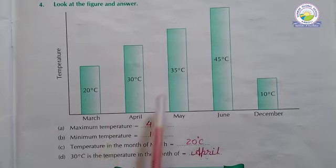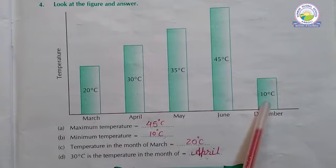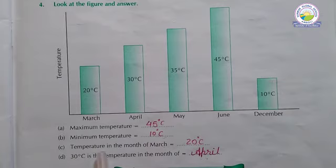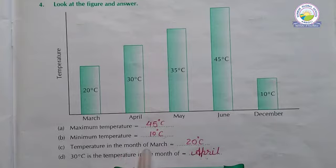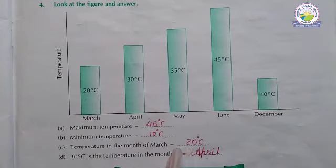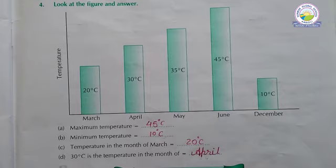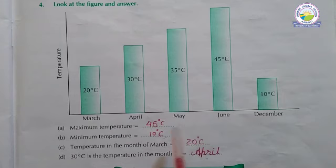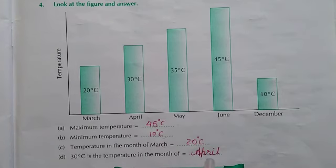Minimum temperature — the lowest temperature is 10 degrees Celsius. Temperature in the month of March: 20 degrees Celsius. Which month has 30 degrees Celsius? That is April. So in this whole chapter, all questions are solved.